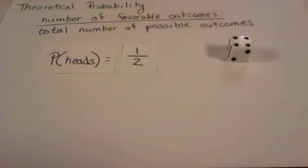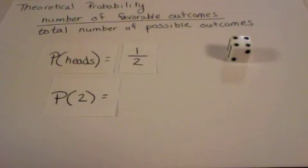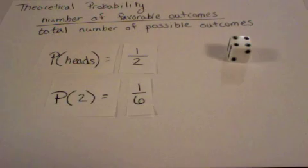Now let's look at the die. Let's first find the probability of rolling a two. Since there is only one two on a number cube, the number of favorable outcomes is one. Then there are six sides on this die, so the number of possible outcomes would be six. So my probability of two would be one out of six.